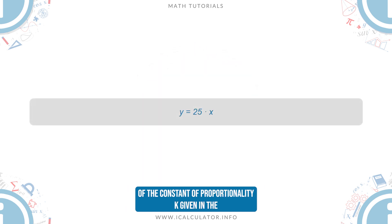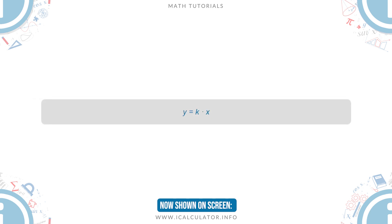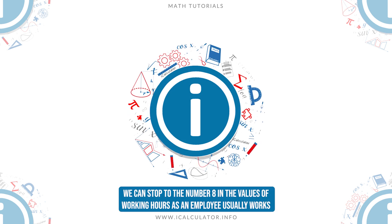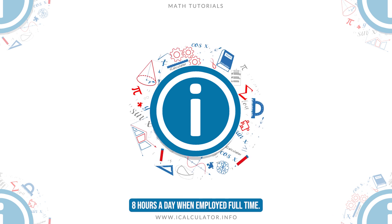Given in the general formula of direct variation now shown on screen, we can stop to the number 8 in the values of working hours, as an employee usually works 8 hours a day when employed full-time.